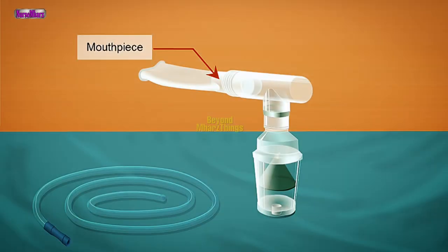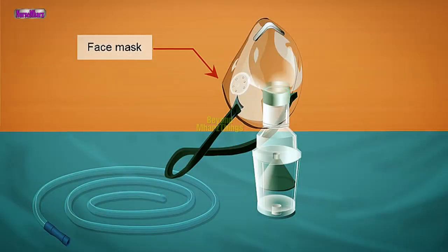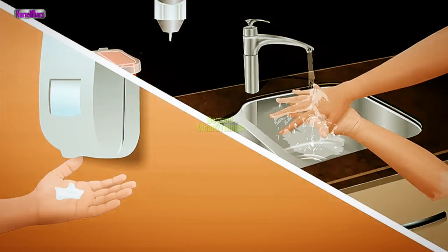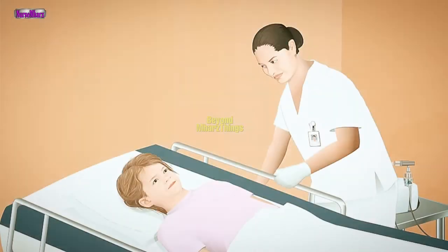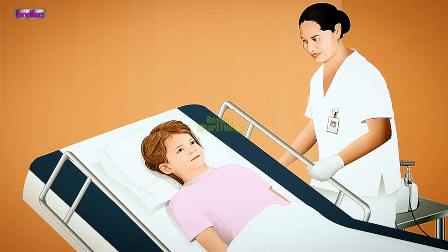Assemble the nebulizer equipment according to the manufacturer's recommendations. Perform hand hygiene and don gloves. Assist the child into a comfortable sitting or semi-Fowler position as tolerated to allow full inhalation efforts. The child may be held in a family member's lap for optimal positioning as indicated.